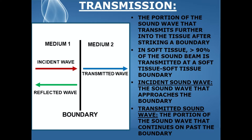In soft tissue, greater than 90% of the sound beam is transmitted at a soft tissue-soft tissue boundary. The incident sound wave is represented by the red arrow in the diagram, and this is the sound wave that approaches the boundary — the dividing line between two different types of tissues.